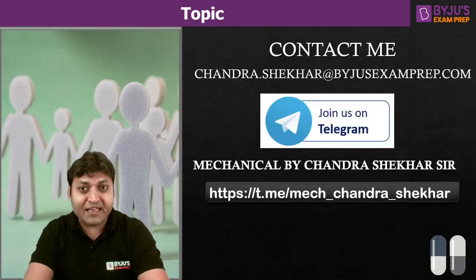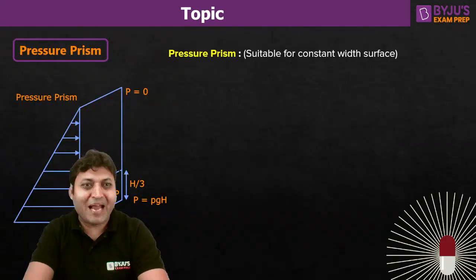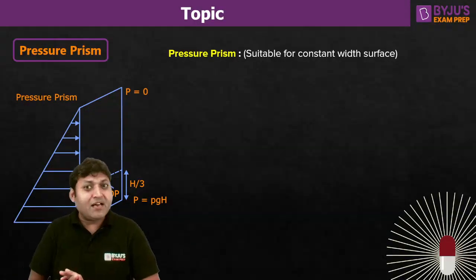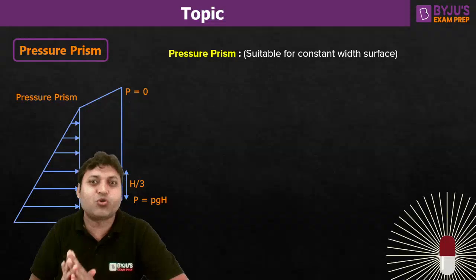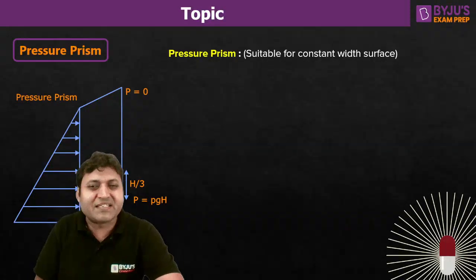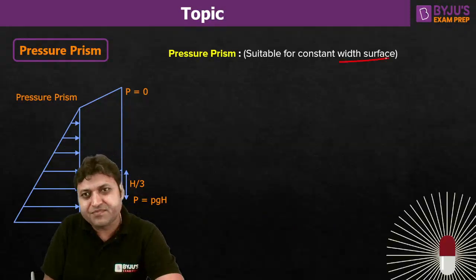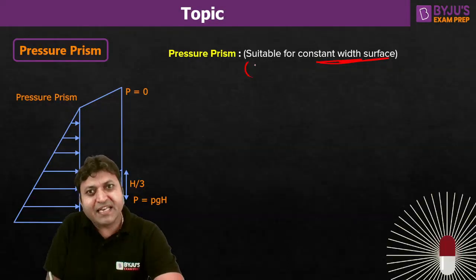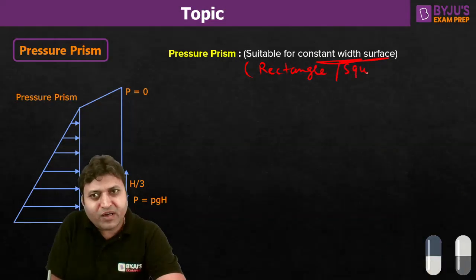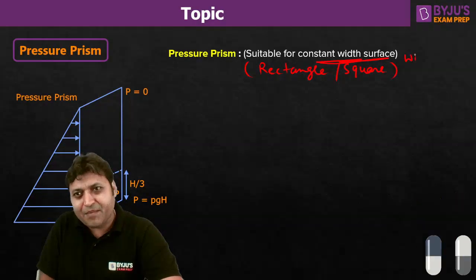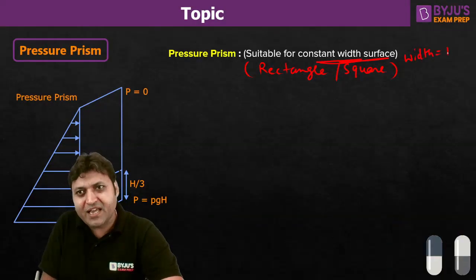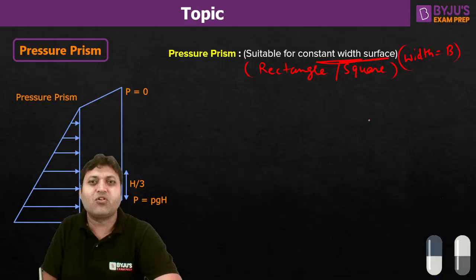Let us start talking about the pressure prism. The concept of pressure prism is most suitable for surfaces with constant width, such as surfaces in the form of a rectangle or a square. The width is, let us say, B, and this width is constant throughout.